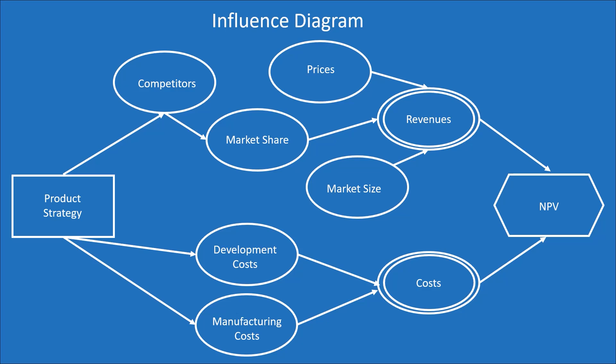There are some common conventions for these shapes. Decisions are represented by rectangles. Uncertainties are represented by ovals, and a calculated uncertainty is sometimes represented with a double oval — I've used this convention in my example for revenues and costs, while the uncertain assumptions for those calculations are represented as simple ovals. The objective is represented by an octagon.